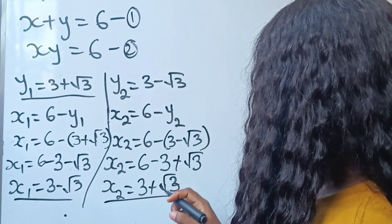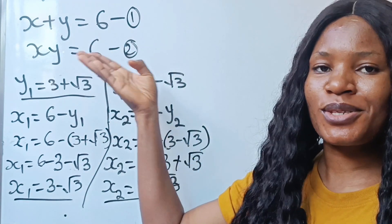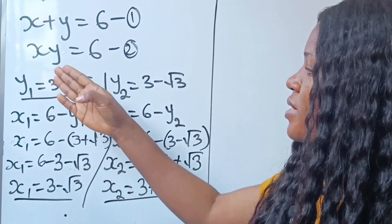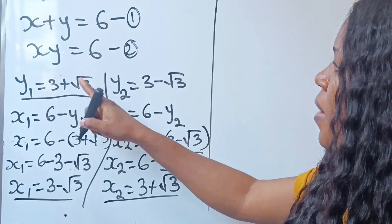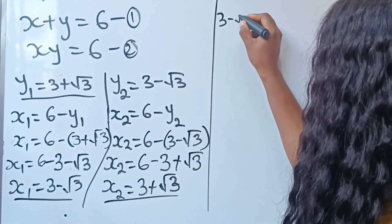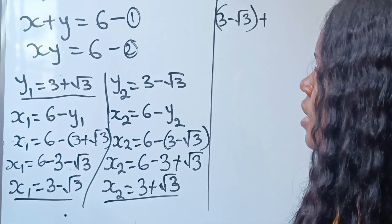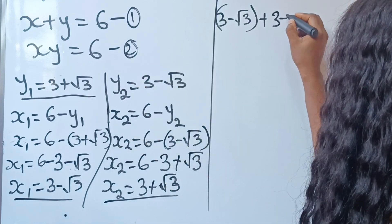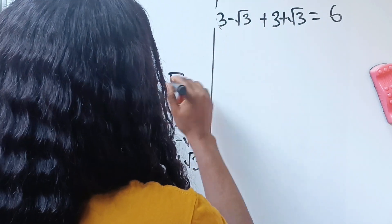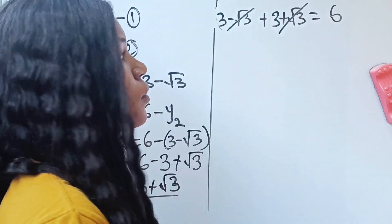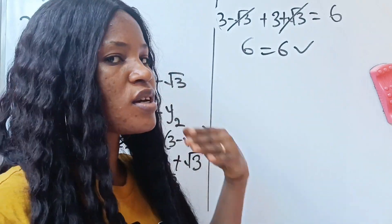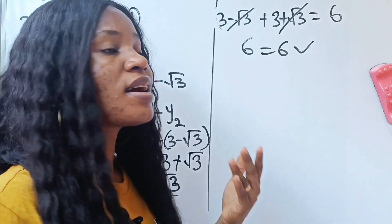Now let's get to the most interesting part — let's substitute what we got into the original equation to verify. Using x1 and y1: x plus y equals 6, so 3 minus root 3 plus 3 plus root 3. The minus root 3 and plus root 3 cancel to give 0, leaving 3 plus 3, which equals 6. Verified! You can also substitute the values into the second equation and you will still get the same answer.